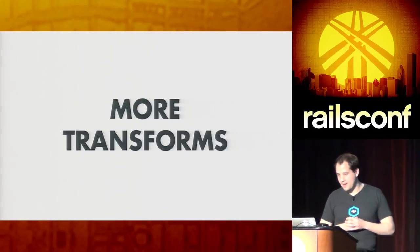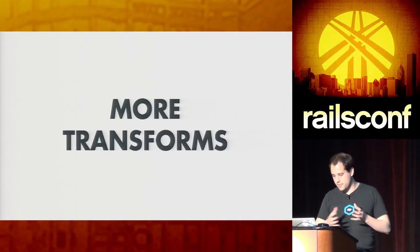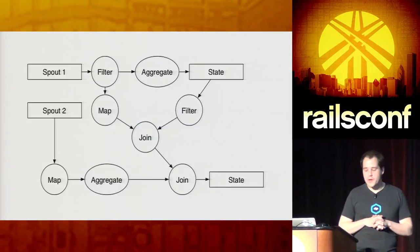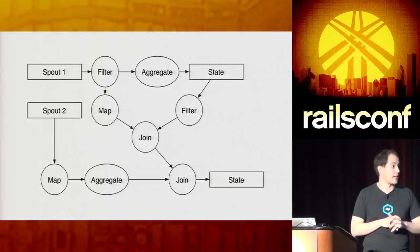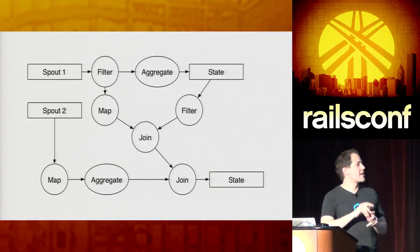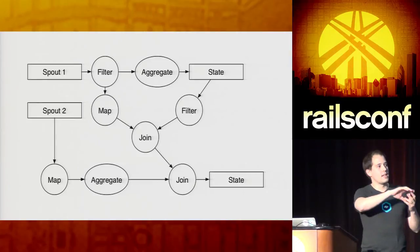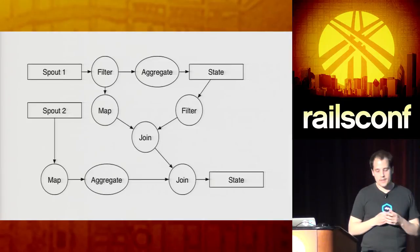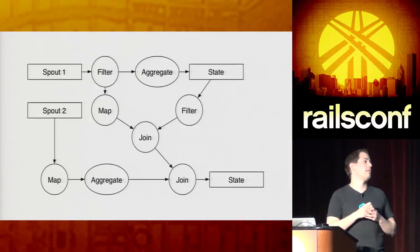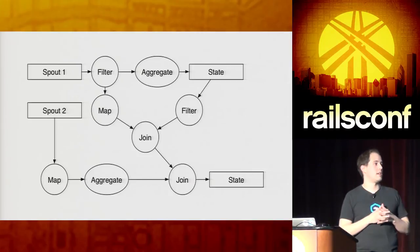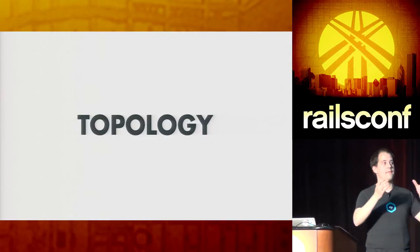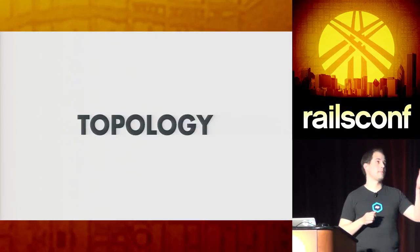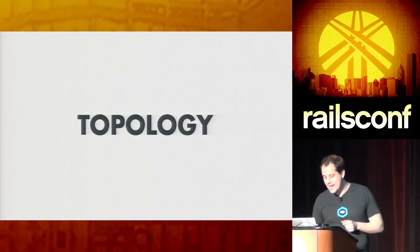From here, what you end up doing is modeling your data in terms of data flow to get to the endpoint. You can add as many spouts as you want, as many state endpoints, split the streams, join them, and do whatever transformations you want. Storm is going to take care of figuring out how to take this data flow definition and distribute it across your cluster. This entire graph — starting at spouts and ending at states — is called the topology.